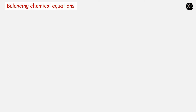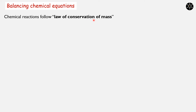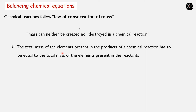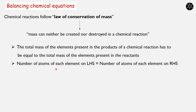After knowing how to write a chemical equation, we need to learn how to balance a chemical equation. To balance a chemical equation, we follow the law of conservation of mass, which states: mass can neither be created nor destroyed in a chemical reaction. Meaning, the total mass of elements in the products must equal the total mass of elements in the reactants. In other words, the number of atoms of each element on LHS must equal the number of atoms on RHS. Let us consider the equation: H₂ + O₂ → H₂O.